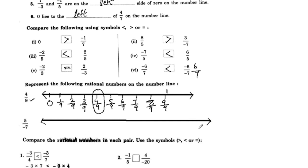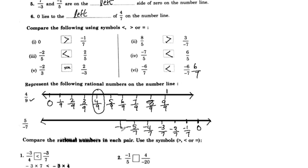On the number line, we have 0 and here we have 7 parts divided by 7 parts. The first one is negative 1 by 7, negative 2 by 7, negative 3 by 7, negative 4 by 7, negative 5 by 7, negative 6 by 7. Negative 7 by 7 is equal to 1. So 5 by negative 7 equals negative 5 by 7.